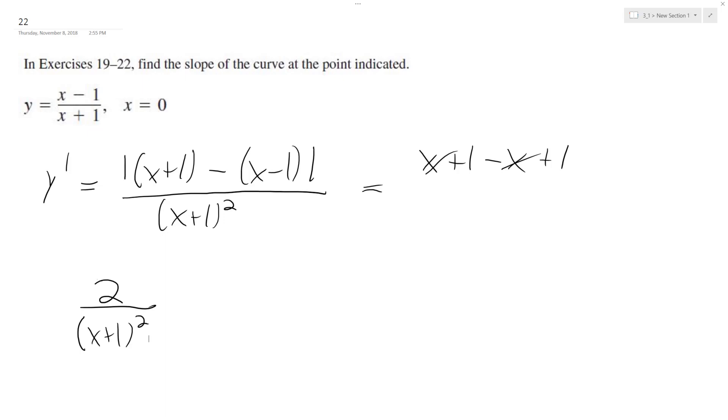All right, so if we plug in 0, what we end up with, so y prime of 0, is equal to 2 over 0 plus 1 squared, 2 over 1 squared, so that's 2.